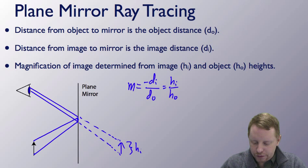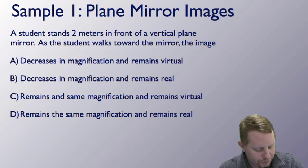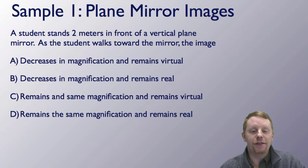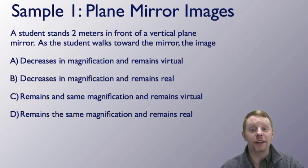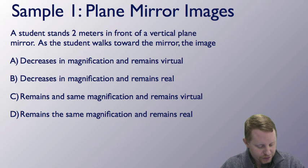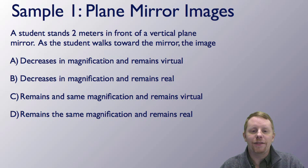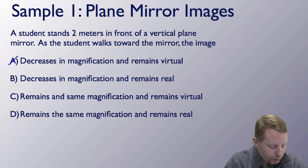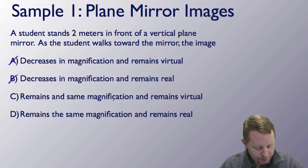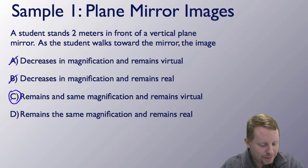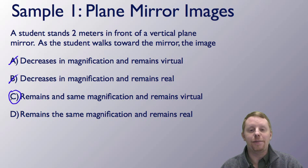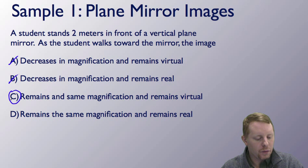Let's take a look at some sample problems. A student stands two meters in front of a vertical plane mirror. As the student walks toward the mirror, the image does what? Does it decrease in magnification and remain virtual? No — magnification remains the same in a plane mirror. That eliminates that choice. The answer is: remains the same magnification and remains virtual. The image stays behind the reflecting surface, and the magnification of a plane mirror is always going to be one.